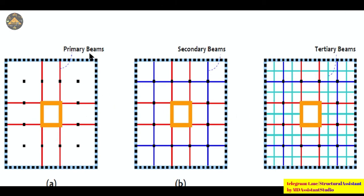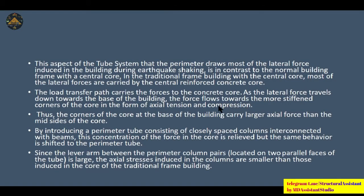Three tube system configurations are possible: a simple tube system with only main beams connected; a tube system with an inner RC structural wall using primary and secondary beams; and a tube system with primary, secondary, and tertiary beams. A key aspect of the tube system is that the perimeter draws most of the lateral force induced during earthquake shaking. In a traditional frame building, most lateral forces are carried by the central reinforced concrete core.